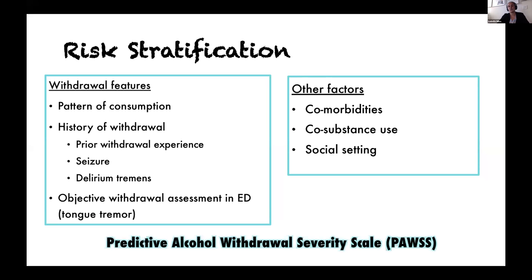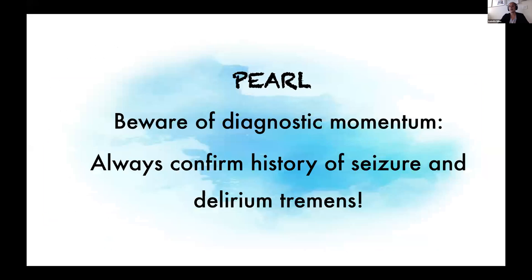My first pearl: be aware of diagnostic momentum. Always confirm the history of seizure and delirium tremens with your patient. Even though it might be documented on previous consults or ED visits, always explore what they mean by that. More commonly than not, patients describe seizures as actually being symptoms of withdrawal without any loss of consciousness, or episodes of syncope while intoxicated. For delirium tremens, patients often use that term to describe their tremors and are not actually experiencing delirium tremens. This is important because it will significantly shift your risk stratification. Overwhelmingly, I find that patients have those misnomers rather than true seizures or DTs.